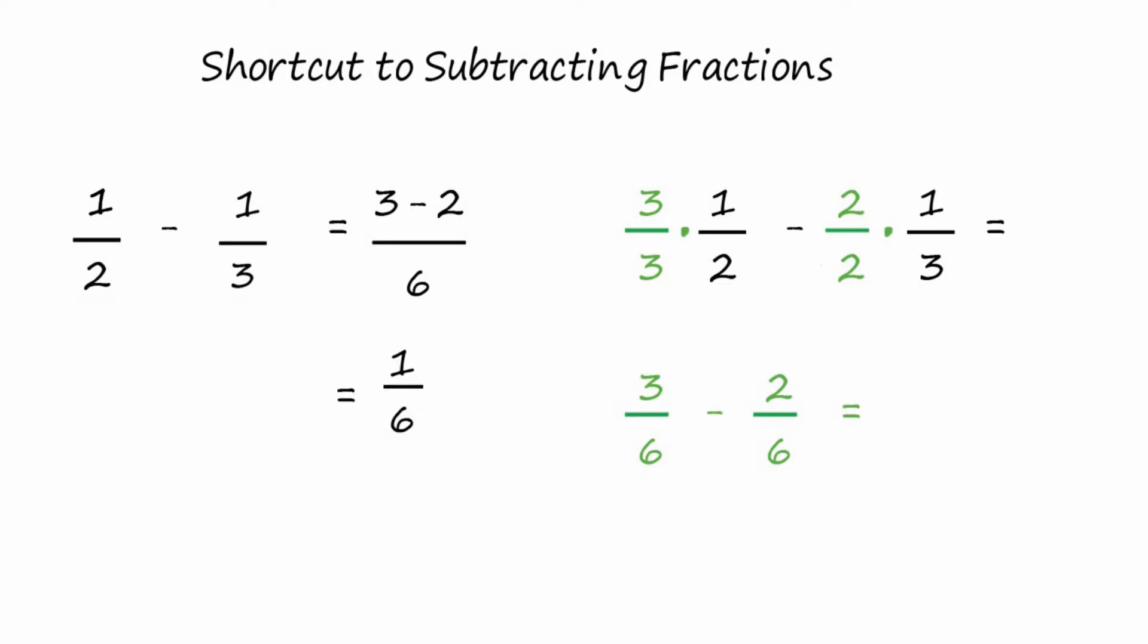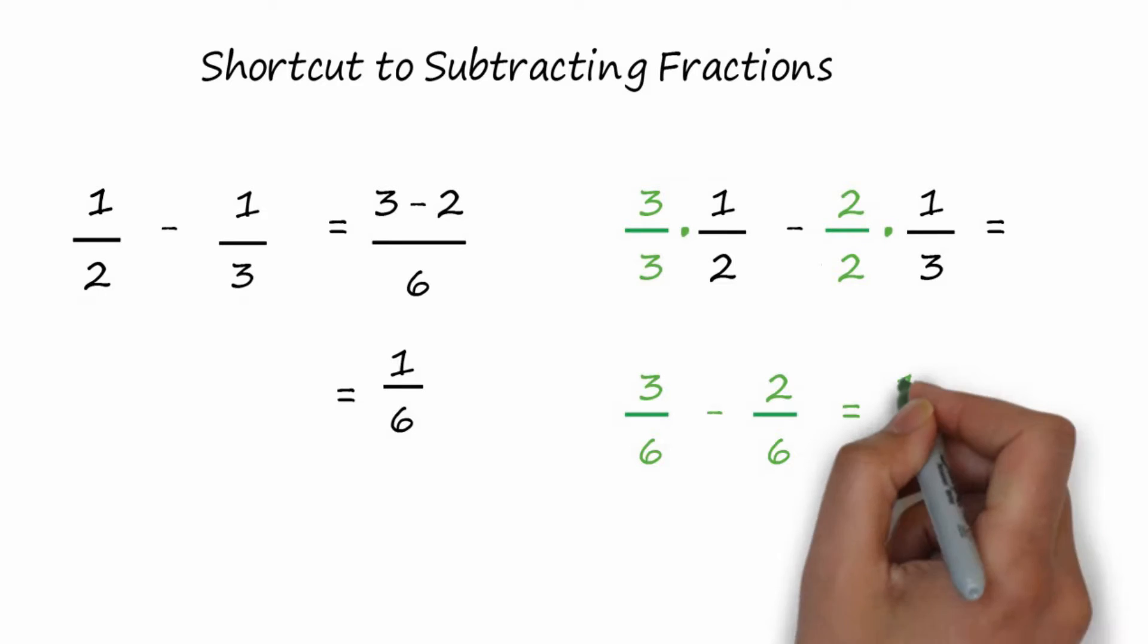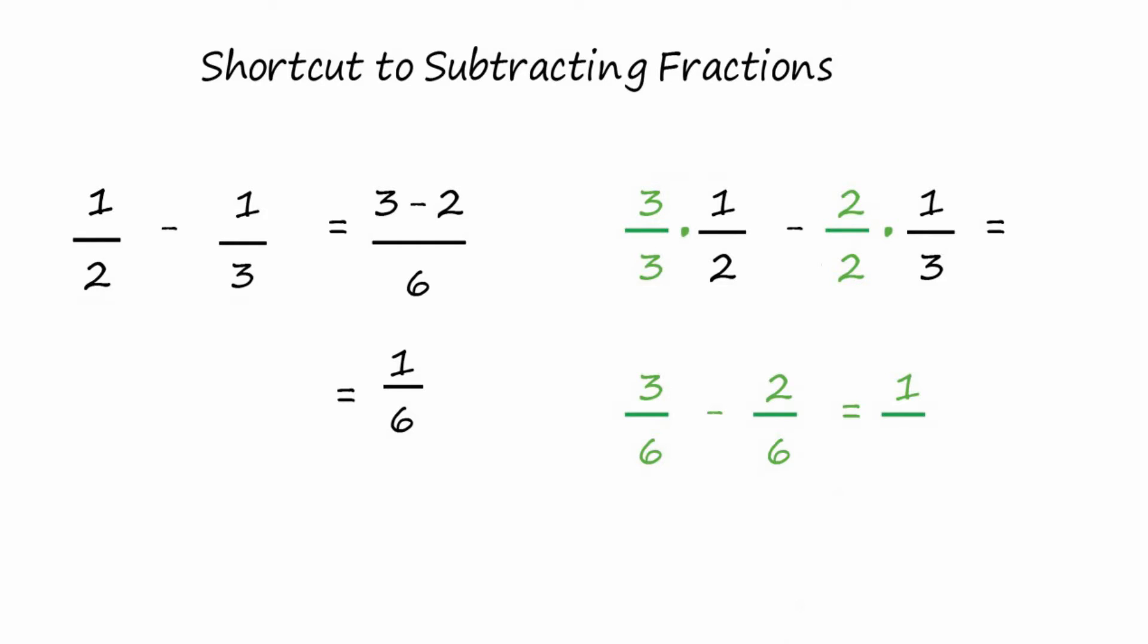And we subtract across the tops, three minus two is one in the numerator, and we put it all over six in the denominator, one-sixth. That's the same answer, and that's why this shortcut method works.